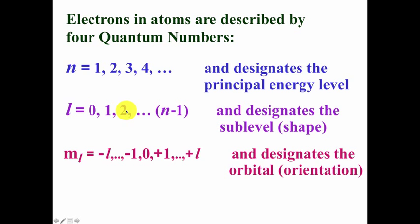If L is equal to 2, which corresponds to the D subshell, then M sub L can be negative 2, negative 1, 0, plus 1, and plus 2. And that's five total choices or values. And therefore there are five orbitals in the D subshell.